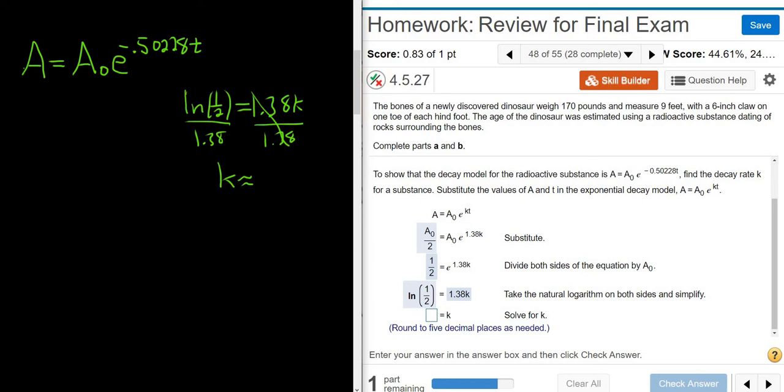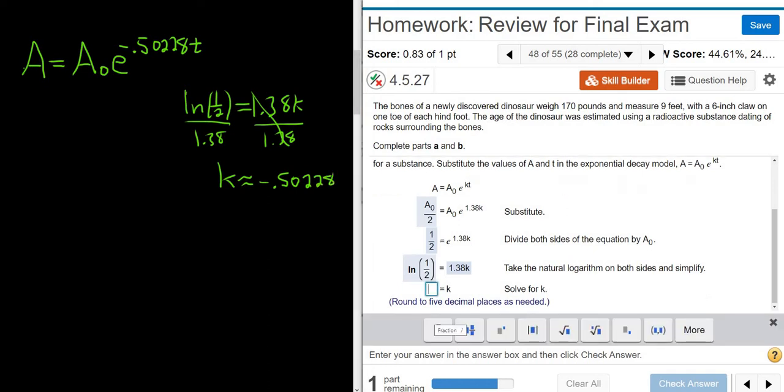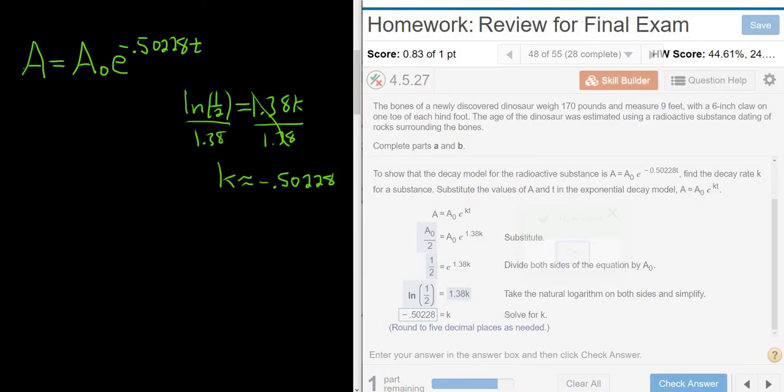So negative 0.5. Looks like negative 0.5028. Right, because it's 5 decimals. Wow, that's a lot of decimals. So it's an interesting problem because they're guiding us through the steps. Normally these steps you'd have to do on your own. So it's kind of nice that they do guide us through it. It makes it a little bit easier. So let's click check answer. Good stuff.